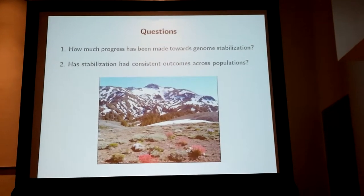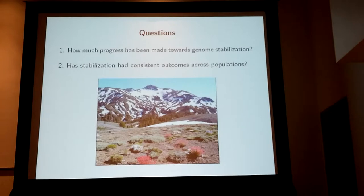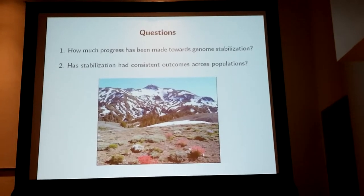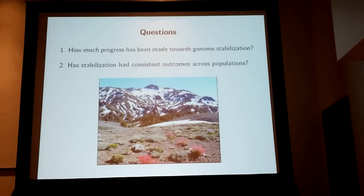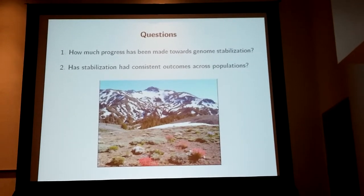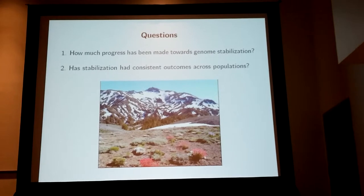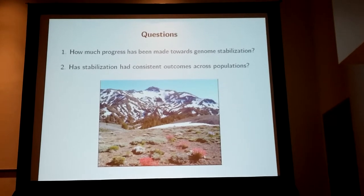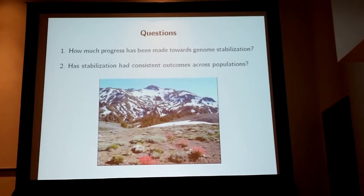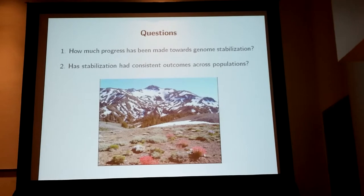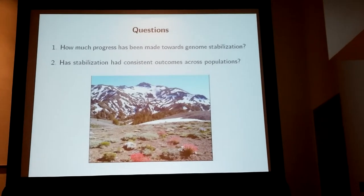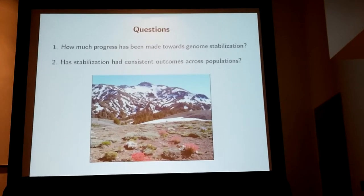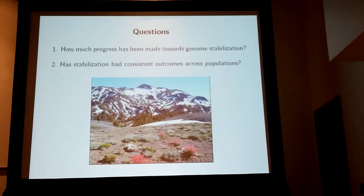This leads me to two questions I want to think about today. One is how much progress has been made towards genome stabilization across these populations, and then how consistent has this stabilization been in terms of the ancestry composition of those blocks from those genomes? The results I'm going to show you are based on a GBS dataset of about a thousand individuals, based on a model developed to look at ancestry frequencies while accounting for ancestry tracks within individuals and correlations of ancestry frequencies at the population level.